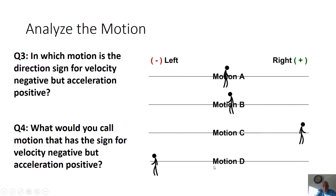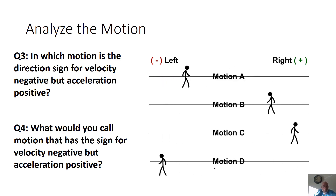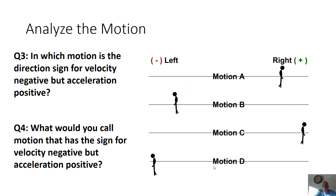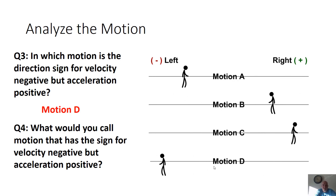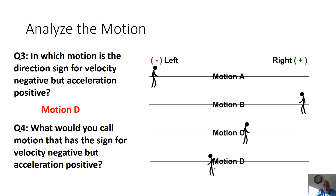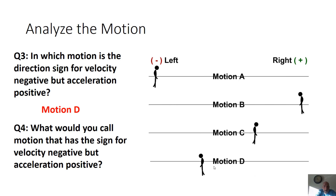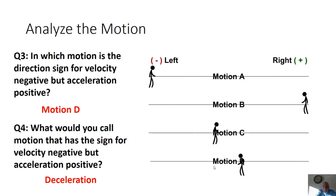Here are some questions: which motion has a negative velocity but positive acceleration? Pause the video and answer. The answer is motion D — you're going left but changing velocity toward the right, so you're slowing down. That combination of negative velocity and positive acceleration is called deceleration.